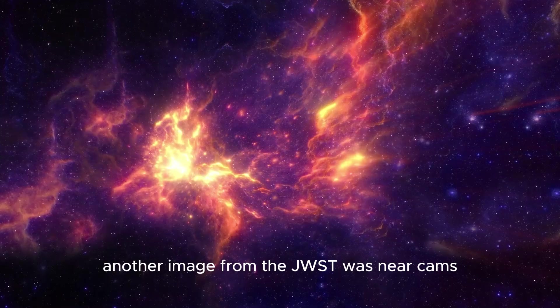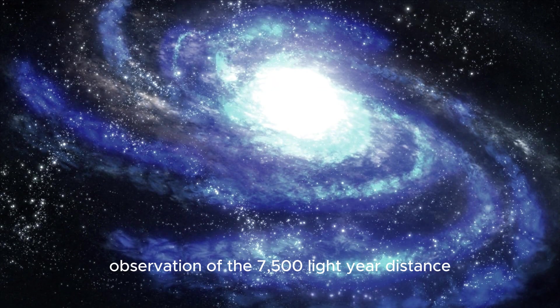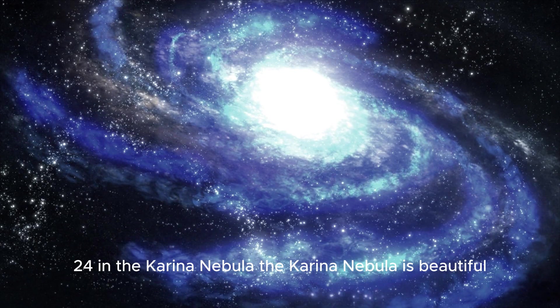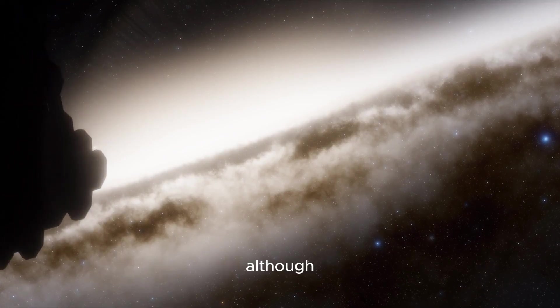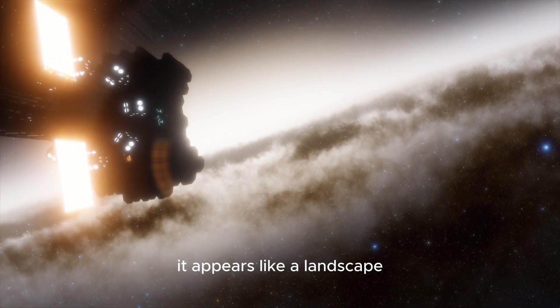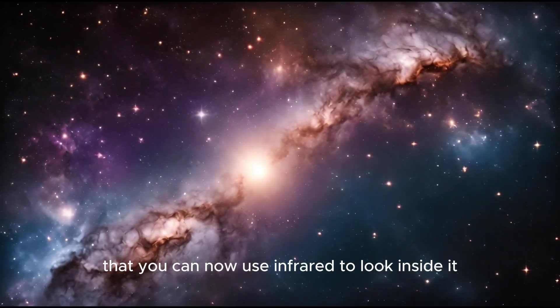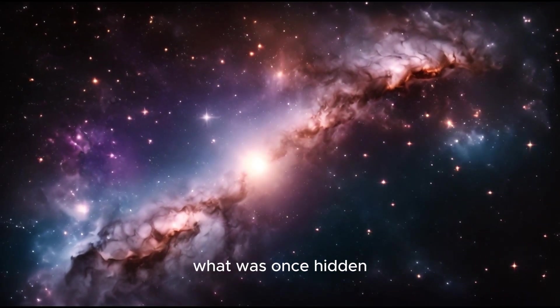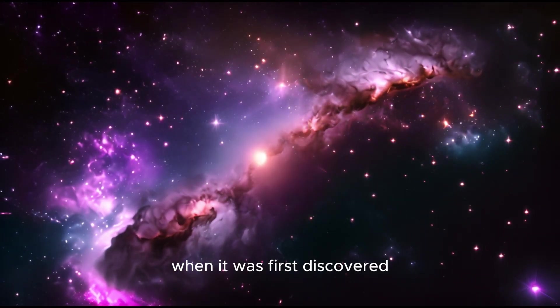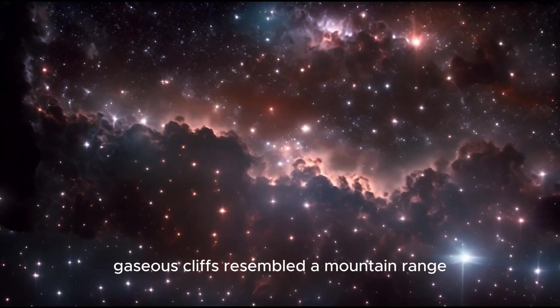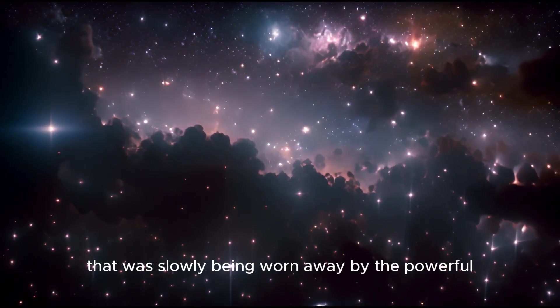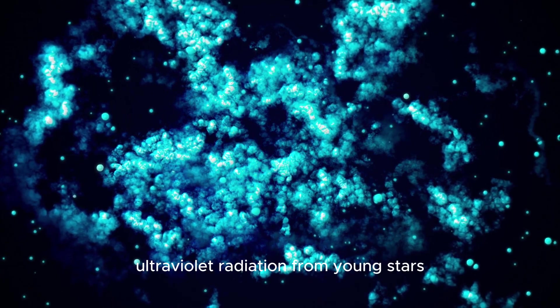Another image from the JWST was near-cam's observation of the 7,500-light-year-distance star-forming region NGC 3324 in the Carina Nebula. The Carina Nebula is beautiful, although it is just gas and dust being sculpted by starlight. It appears like a landscape. It's remarkable that you can now use infrared to look inside it. What was once hidden is now openly displayed in all its splendor. It was named the Cosmic Cliffs when it was first discovered because the vast gaseous cliffs resembled a mountain range. It was actually the edge of a massive cavity that was slowly being worn away by the powerful ultraviolet radiation from young stars.